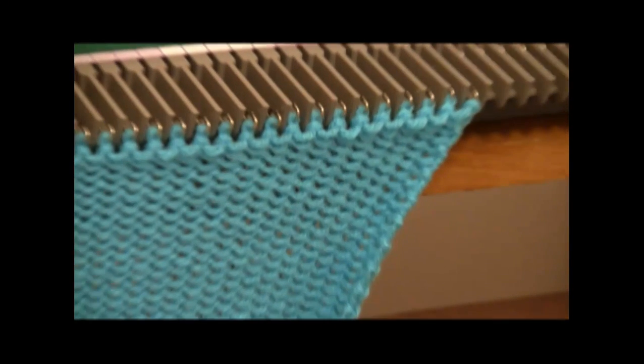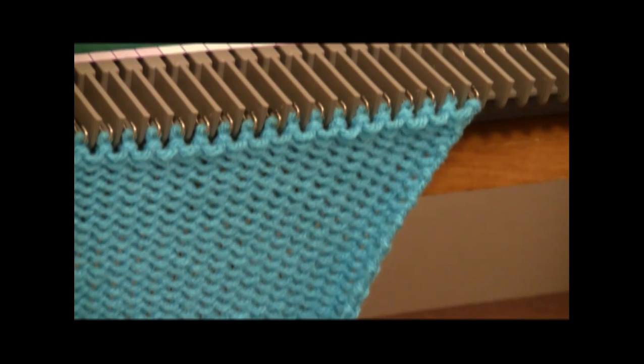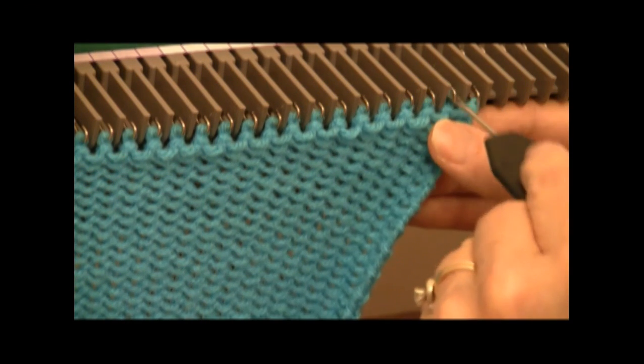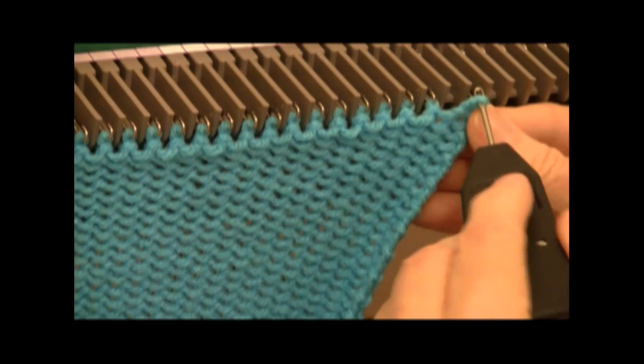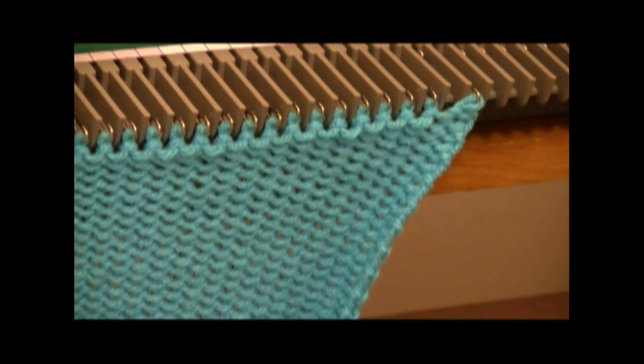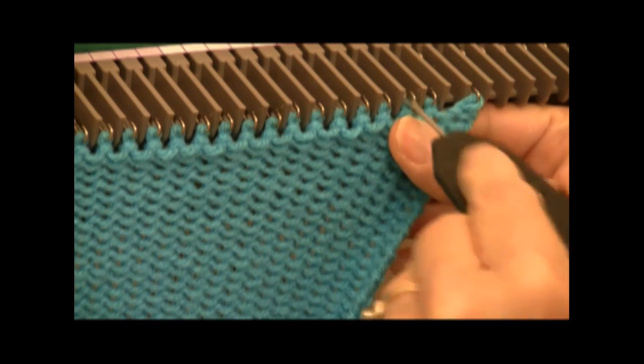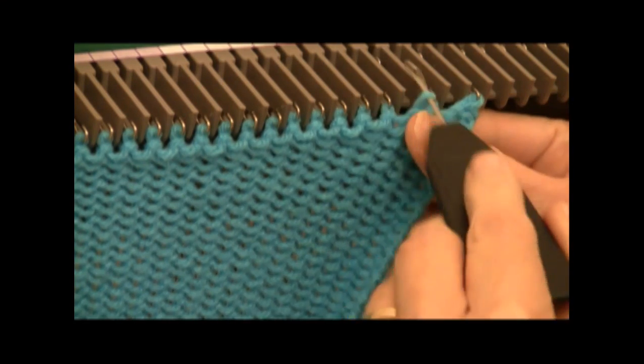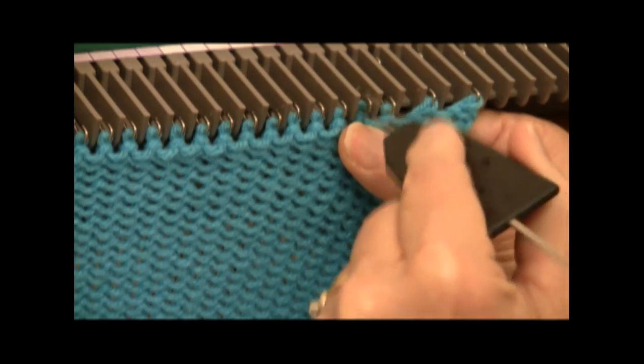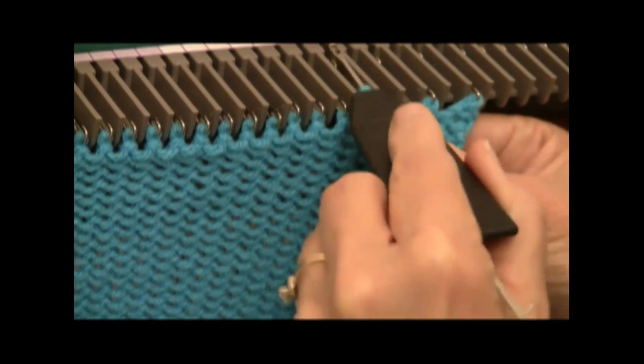Once the 37 rows are knitted, you're going to double up the stitches on every other needle. That is, you move the second stitch to the first needle, and you put that second needle out of work, and then the second stitch, fourth stitch, to the third needle, and then the sixth stitch to the fifth needle. Do that all the way across.